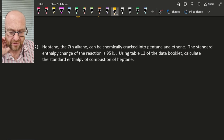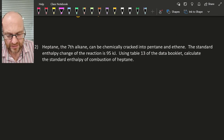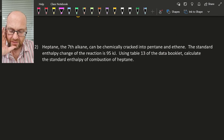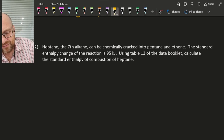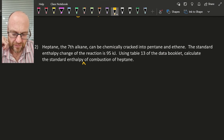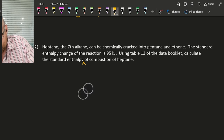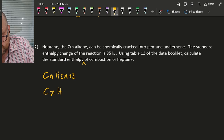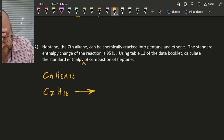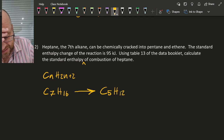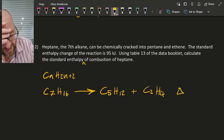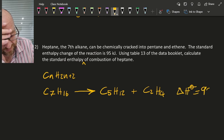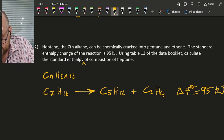On to the next one. Heptane, the 7th alkane, can be chemically cracked into pentane and ethene — that's 95 kilojoules for that. We'll use Table 13 to calculate the standard enthalpy of combustion of heptane. Alkanes have a general formula of CₙH₂ₙ₊₂, so heptane has 7 carbons and 16 hydrogens. That turns into pentane and ethene, and delta H for that cracking is 95 kilojoules.